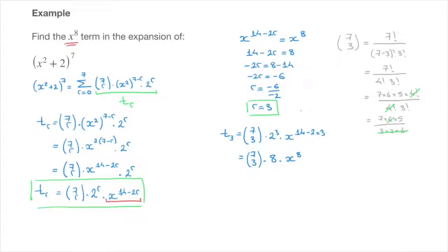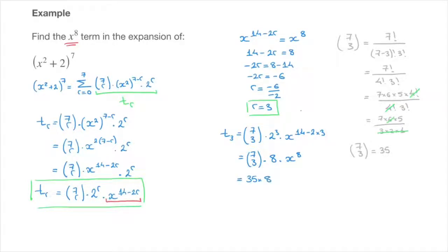We're left with 7 times 5, which equals 35. So the binomial coefficient 7 choose 3 equals 35. Going back to the x to the power of 8 term, this equals 35 times 8 times x to the power of 8.